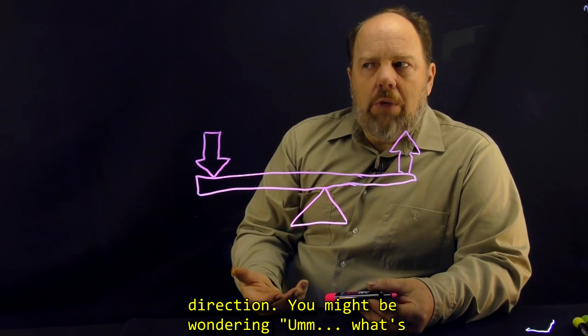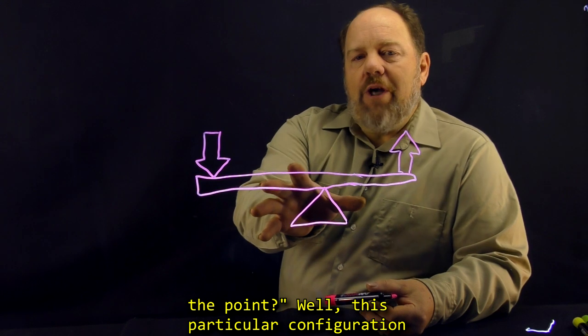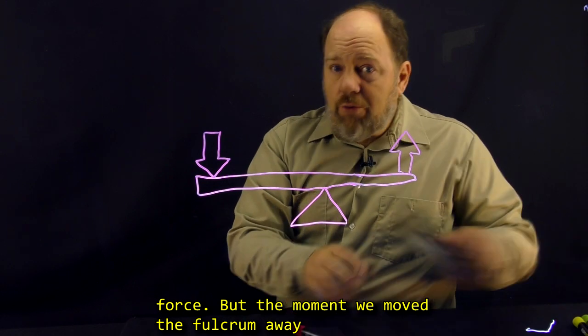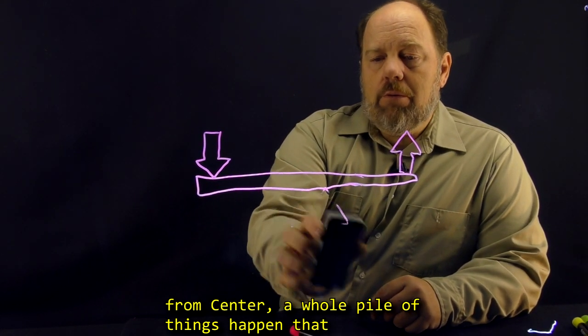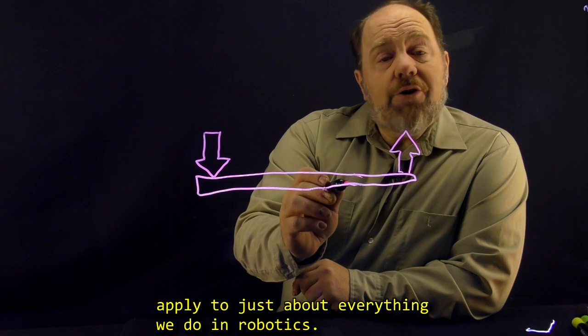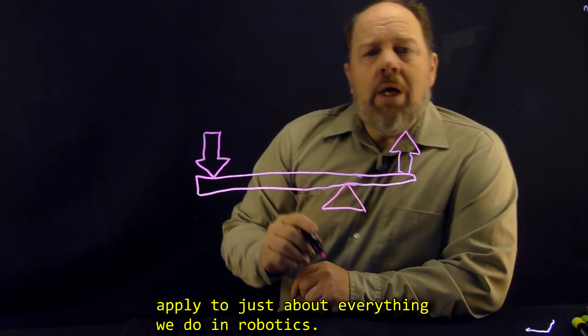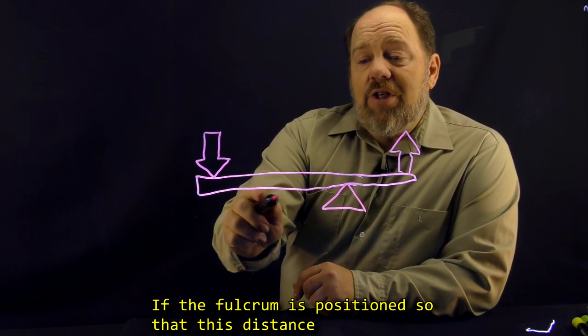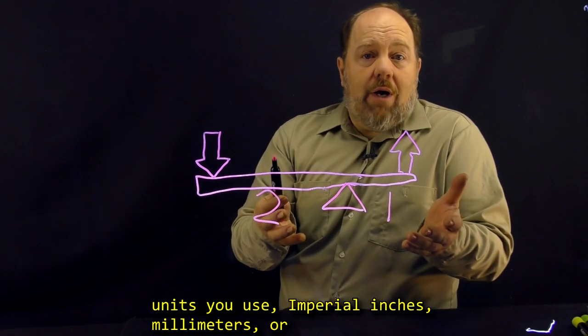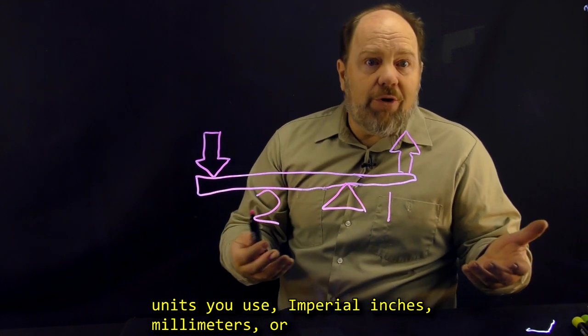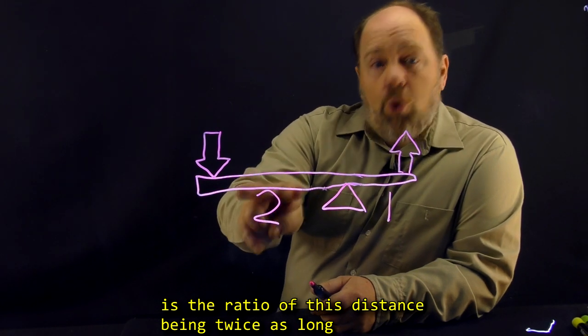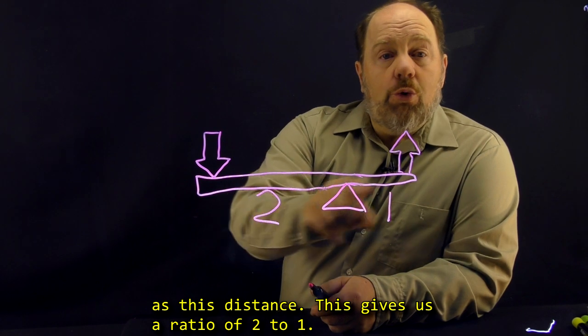Now you might be wondering, what's the point? Well this particular configuration would allow you to reverse the direction of a force, but the moment we move the fulcrum away from the center, a whole pile of things happen that apply to just about everything we do in robotics. If the fulcrum is positioned so that this distance is twice that of that distance, I don't care what units you use, all you care about is the ratio of the distance being twice as long. This gives us a ratio of 2 to 1.